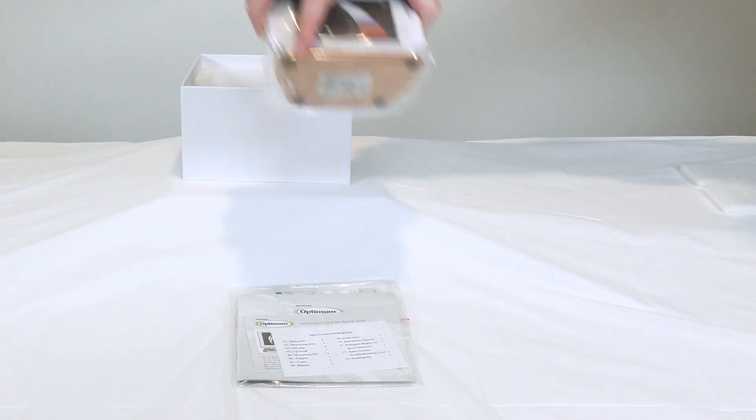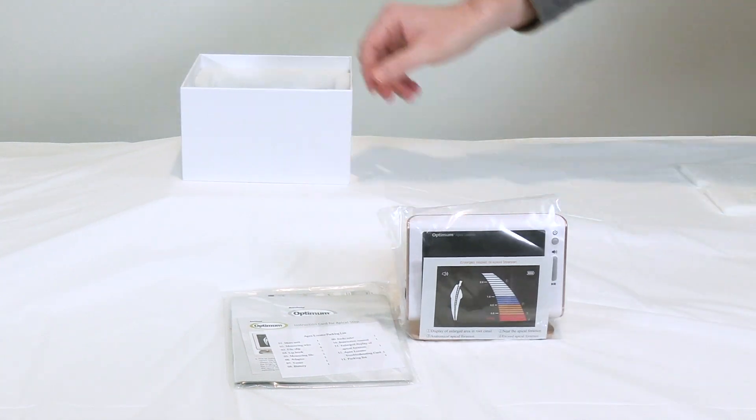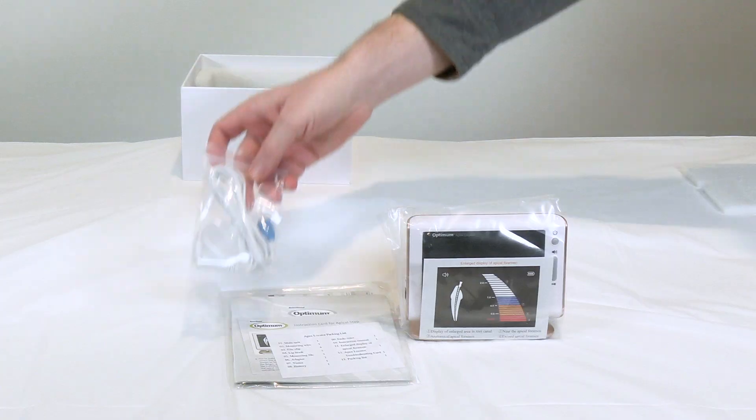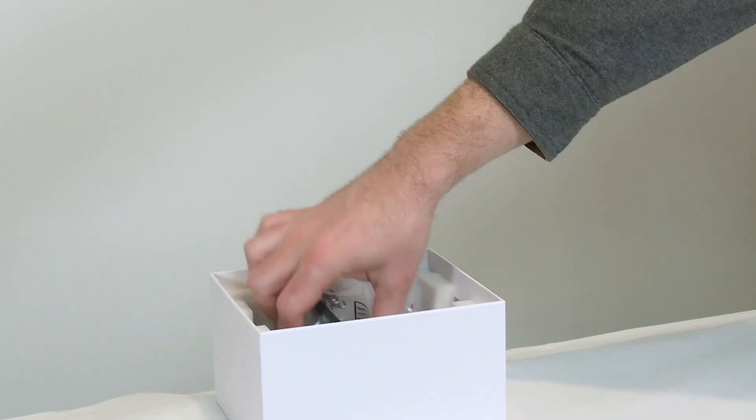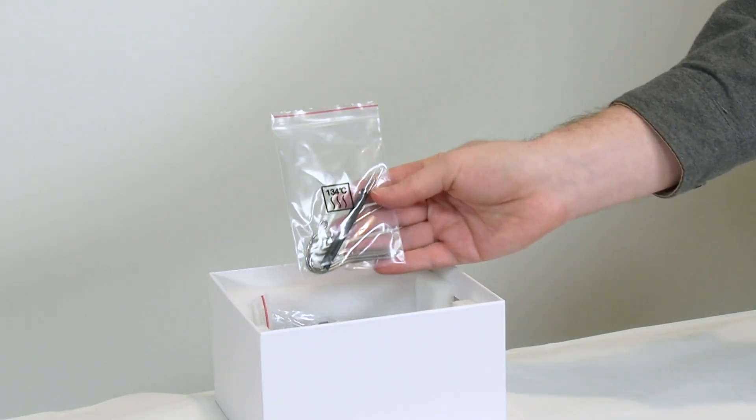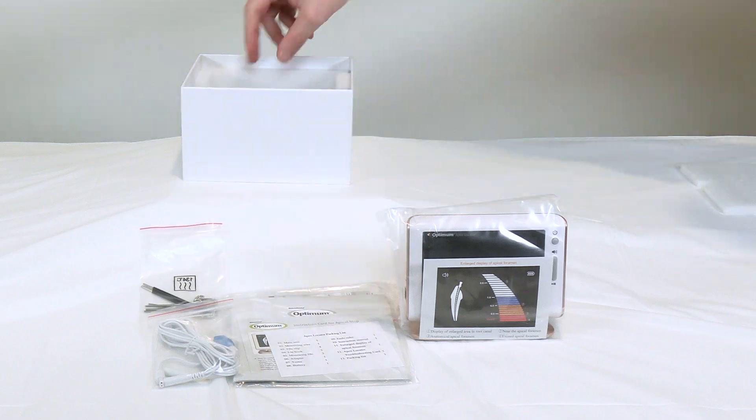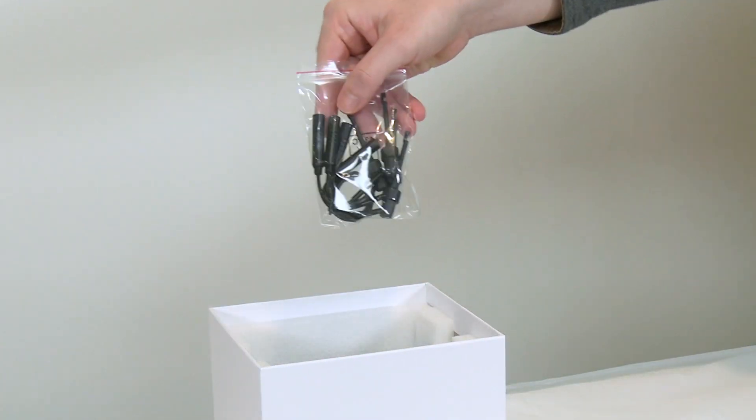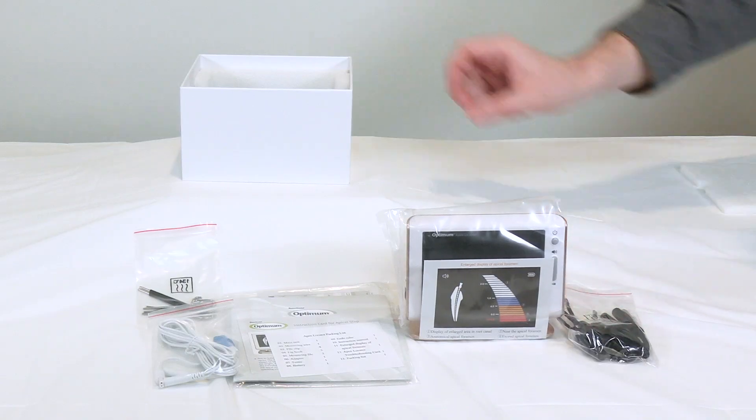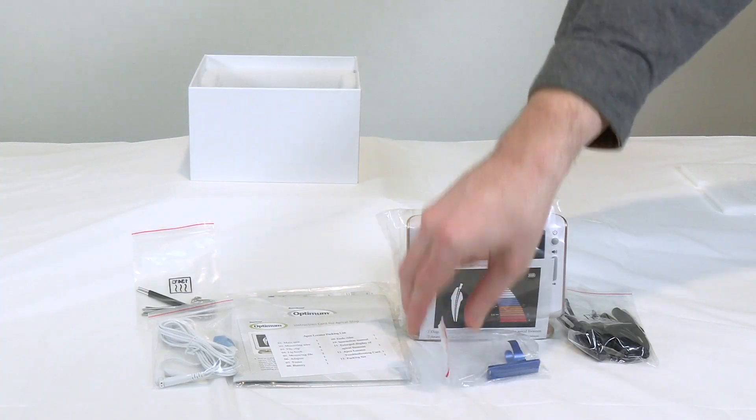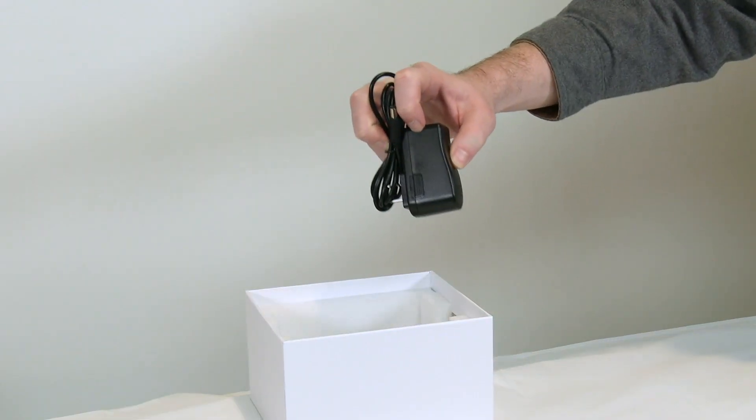The main unit, a bag containing the measuring wire and tester, a bag containing multiple touch probes and lip hooks, a bag containing multiple file clips, an endo ruler, and a power adapter.